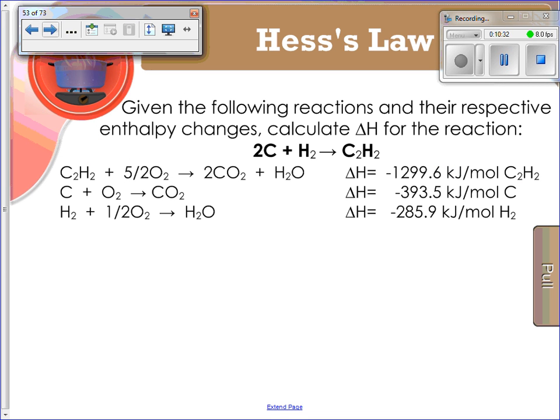Go ahead and pause the video and see if you can do this one on your own. Okay, let's go over it. Looking at what we've got, we've got two carbons. I've got carbon here with only one. So I need to multiply this entire reaction by a factor of two. Then that is going to become negative 787 kilojoules.